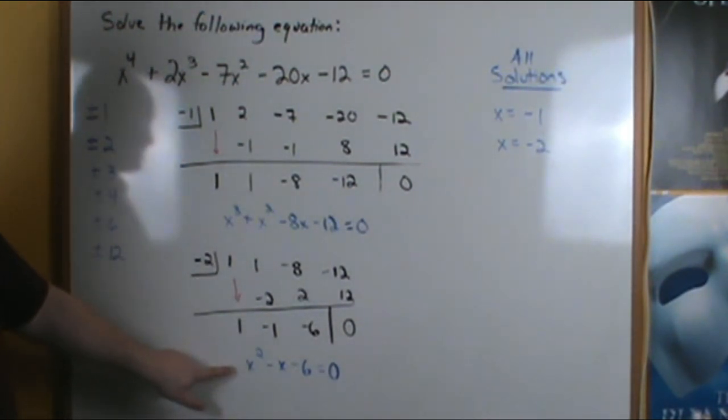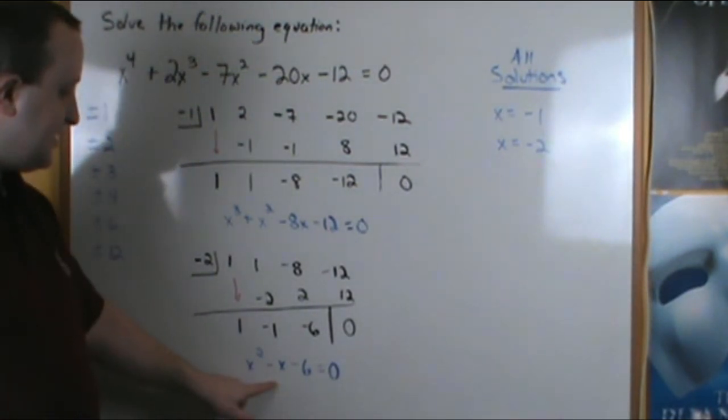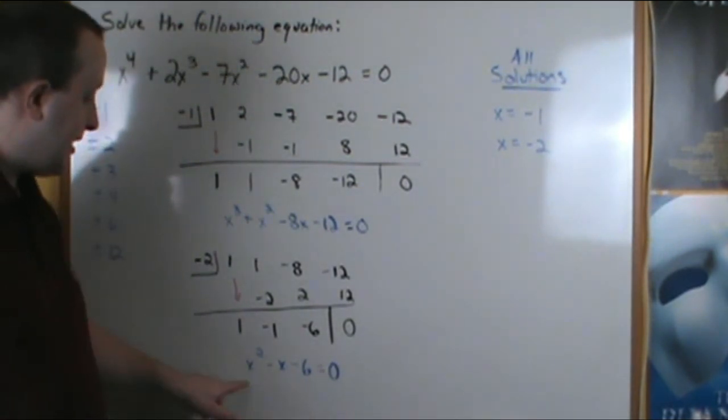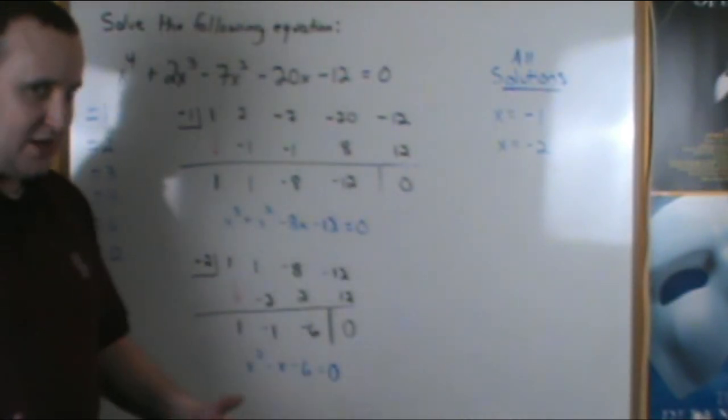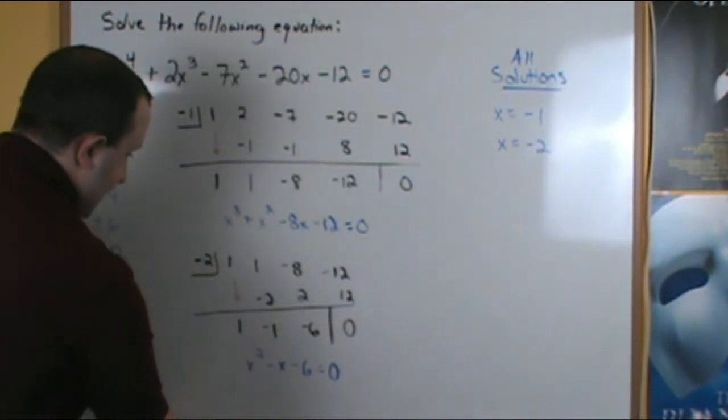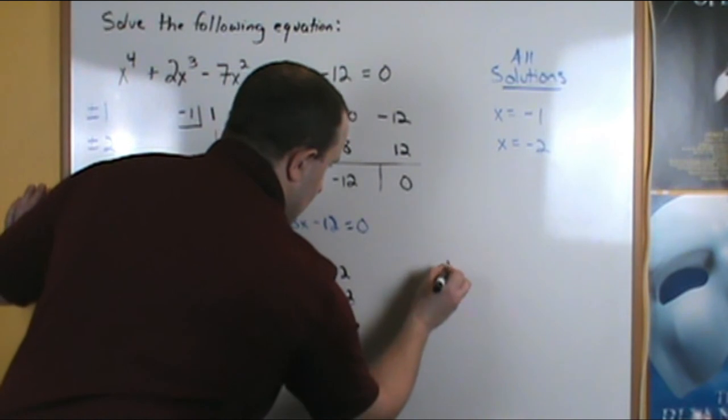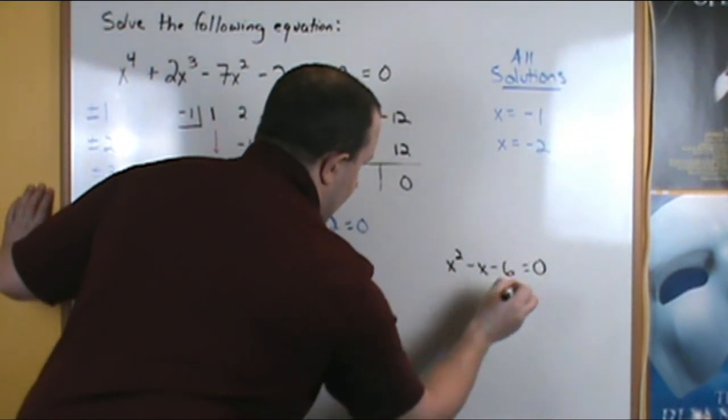From here, we could do more synthetic substitution with some of these values. But what you should notice here, because this trinomial here, x squared minus x minus 6, is factorable, why not factor it, make your life a little bit easier. So if we take x squared minus x minus 6 equals 0, factor it.